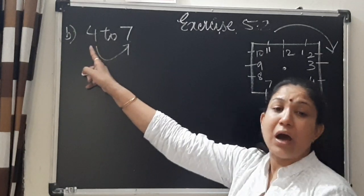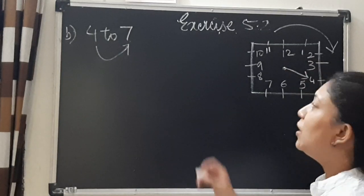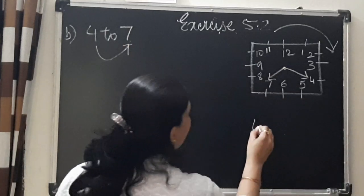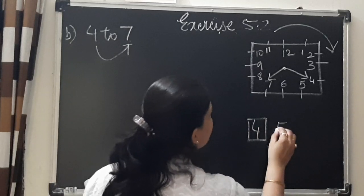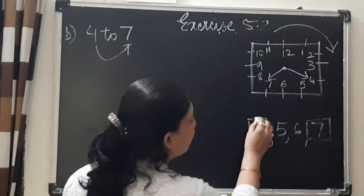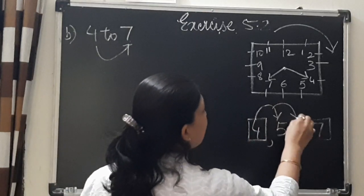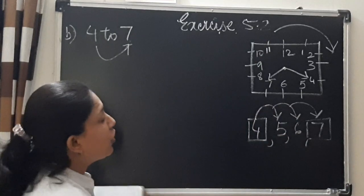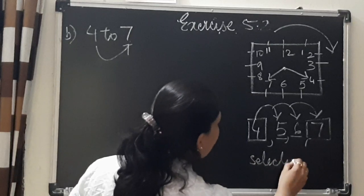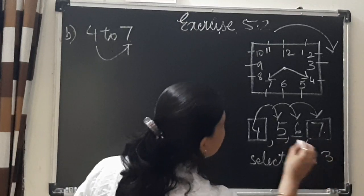The hour hand is pointing at 4. So make a line from 4 to where it has to go — it will stop at 7. It is already at 4, so it will go to 5, 6, and only then it will reach 7. So the hour hand has moved from 4 and pointed to 5, then 6, then 7 — that is 3 numbers selected.